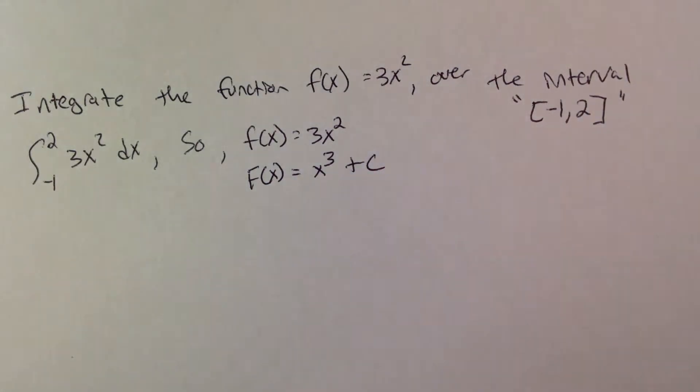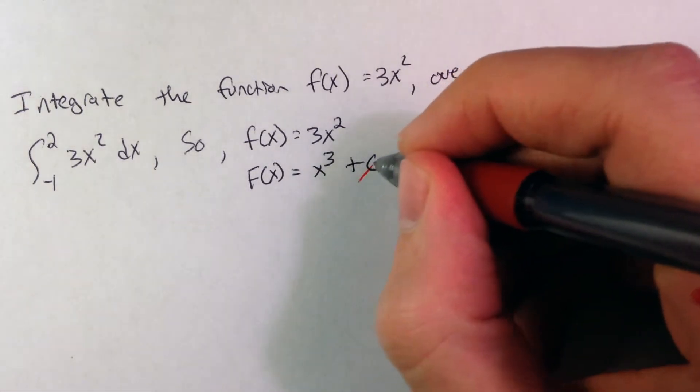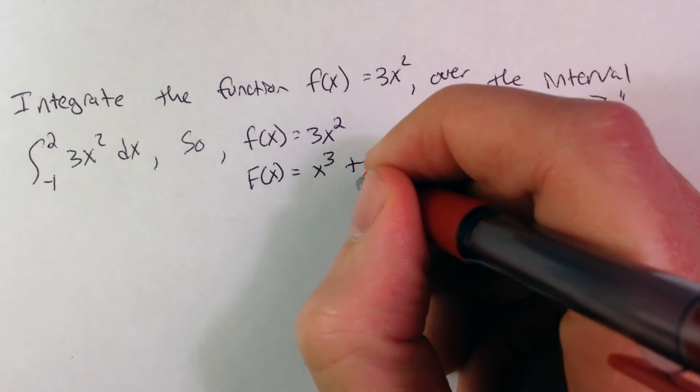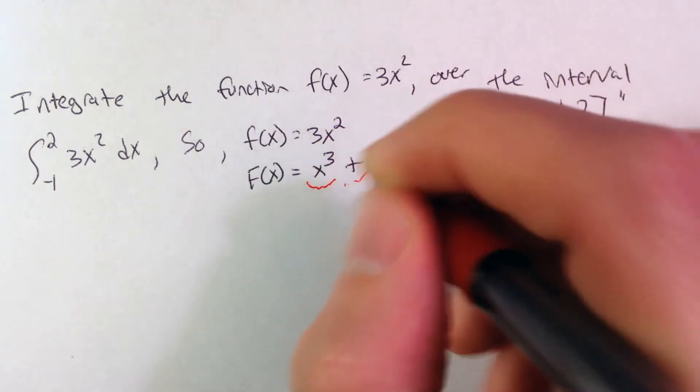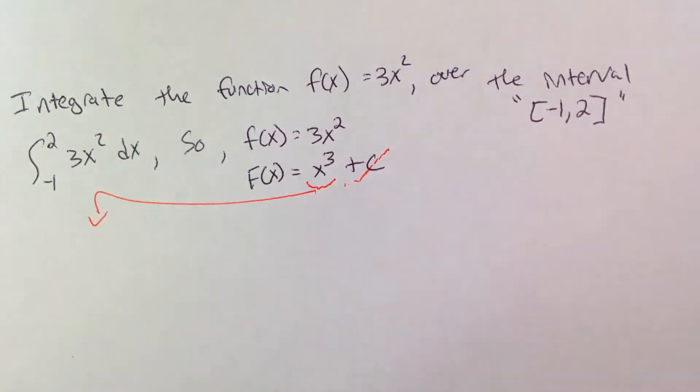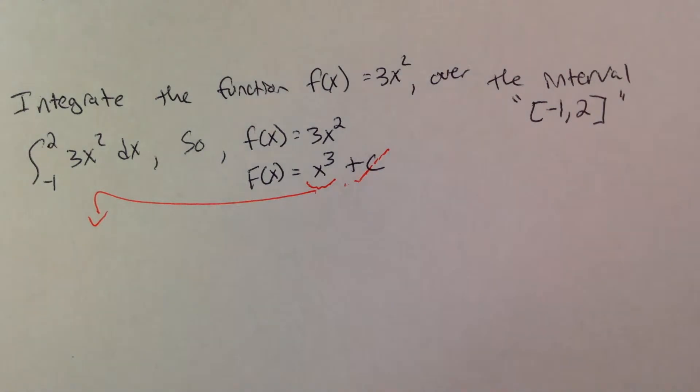Now, our c value, since we're finding our integral over an interval, isn't necessarily needed here because we're going to find an exact value. So if I take this function here, x cubed, that's going to be my integral, my antiderivative of my function.